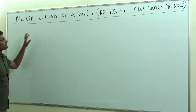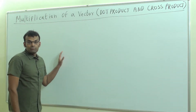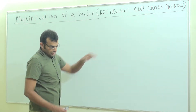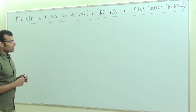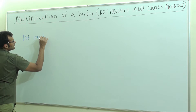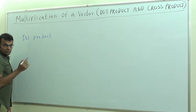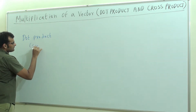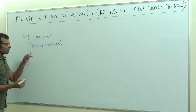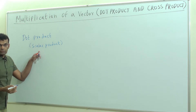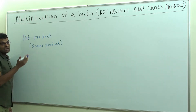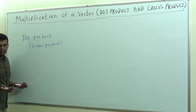In this class, I am going to discuss multiplication of a vector. Multiplication of a vector has two types: dot product and cross product. Dot product is also called scalar product. The reason we call dot product a scalar product is because the resultant we get after the scalar product is a scalar quantity — it does not have any direction.